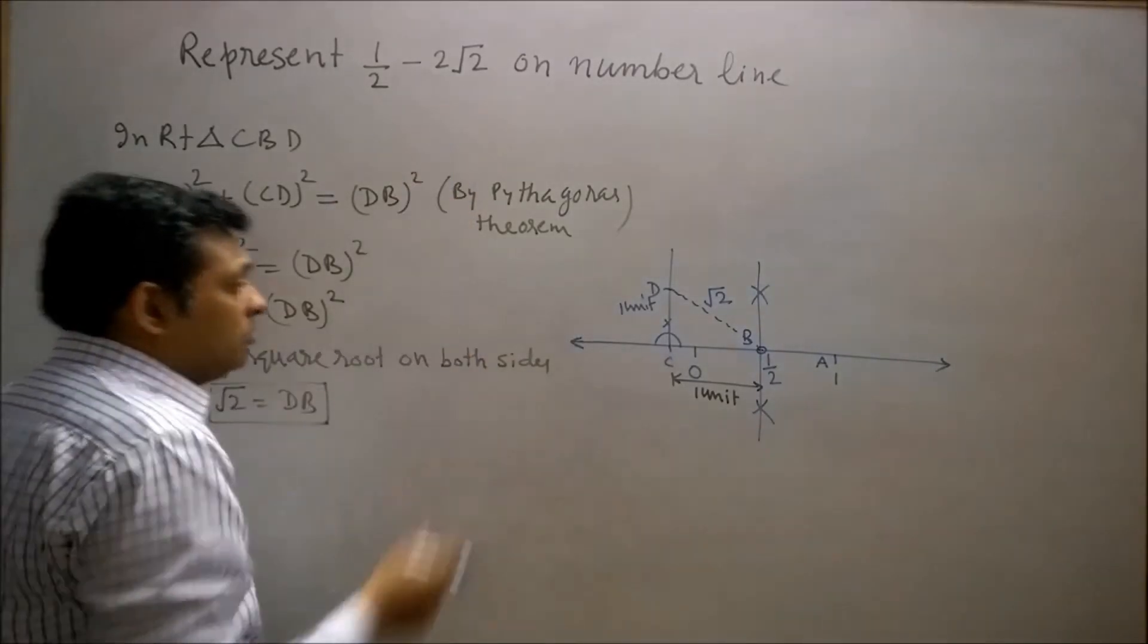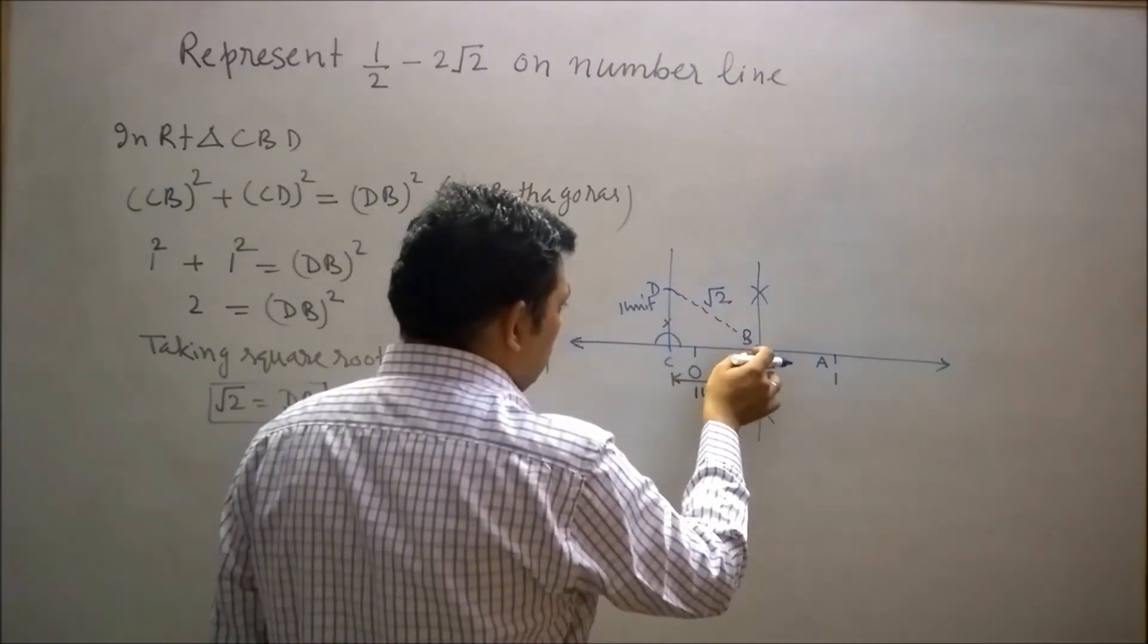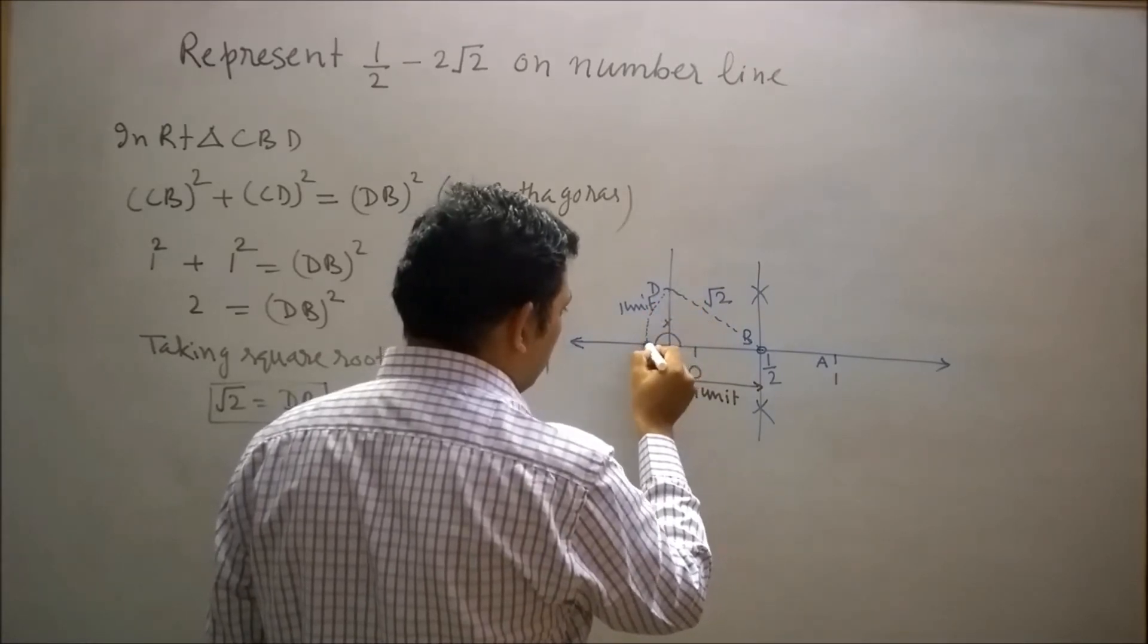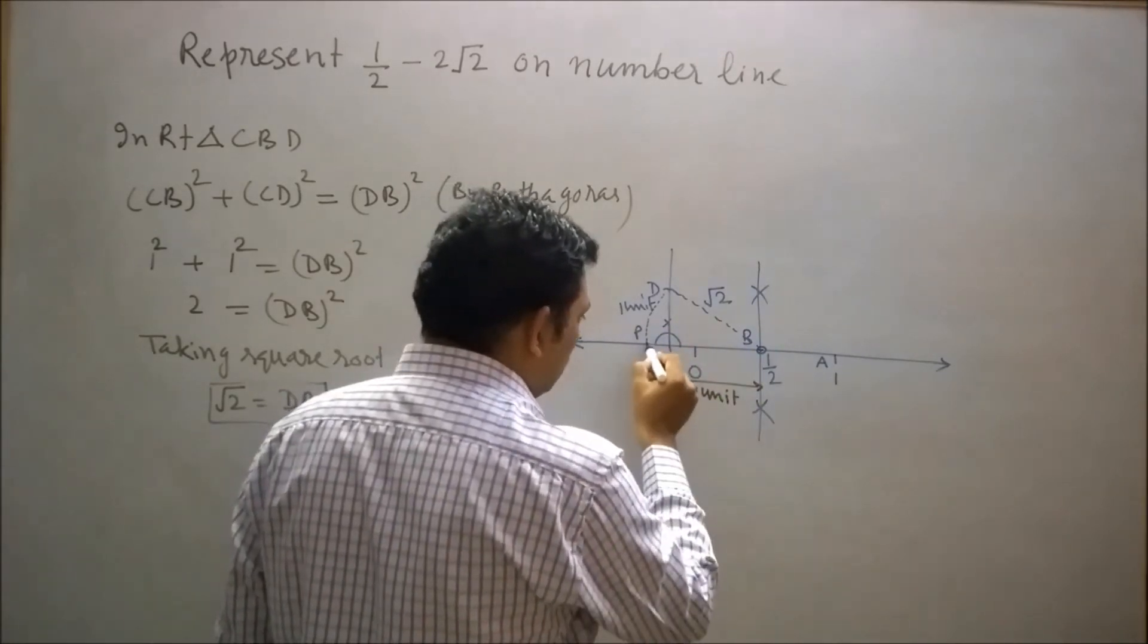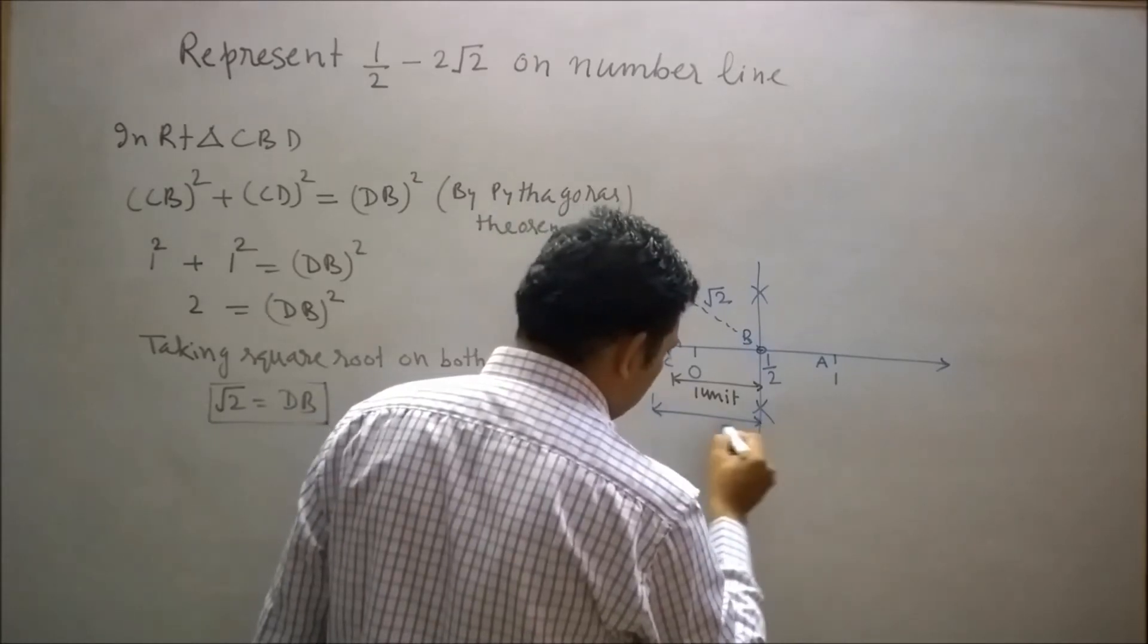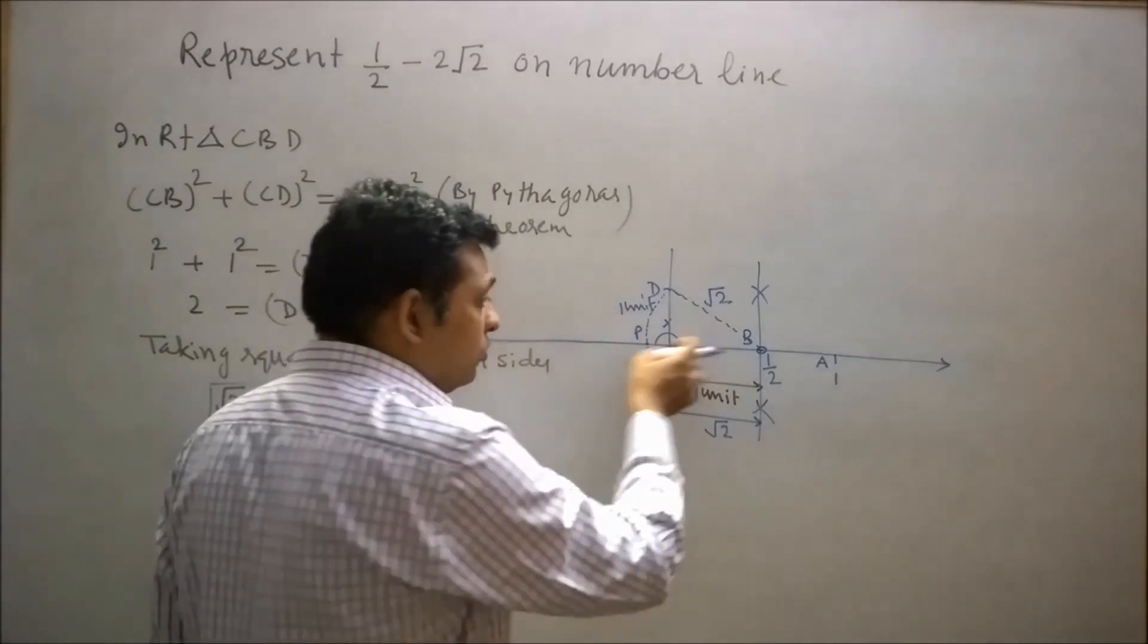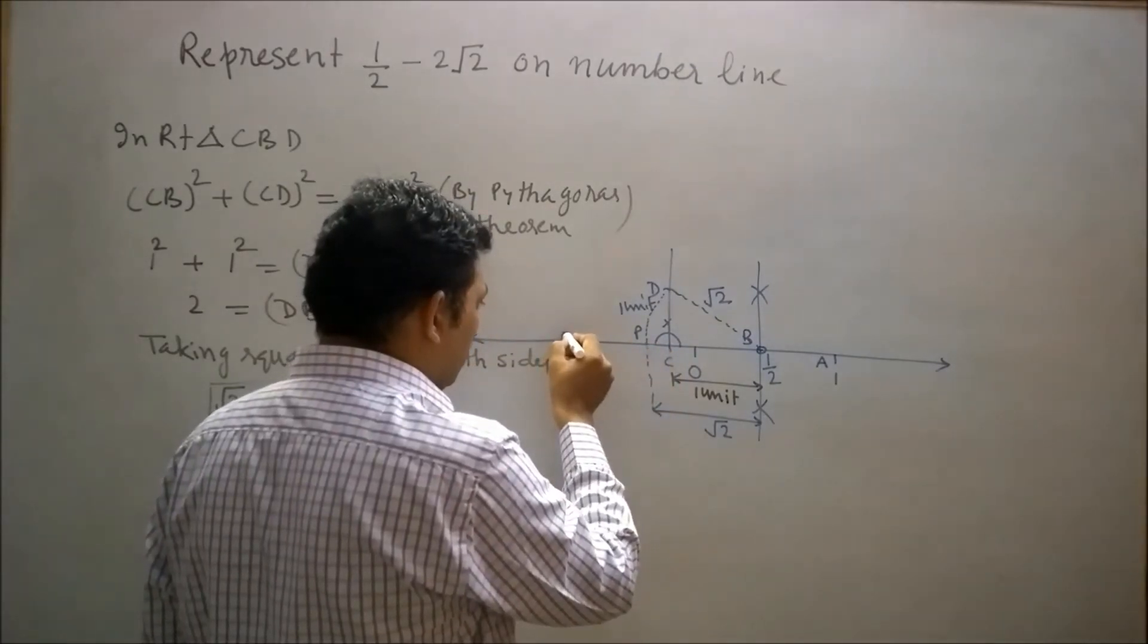Now try to represent minus 2 root 2 on number line. Now draw an arc equal to DB from the center B. Let's say this arc will equal to root 2. This is equal to root 2. Now draw an arc equal to DB on number line. Let's say this arc will intersect the number line at point P.